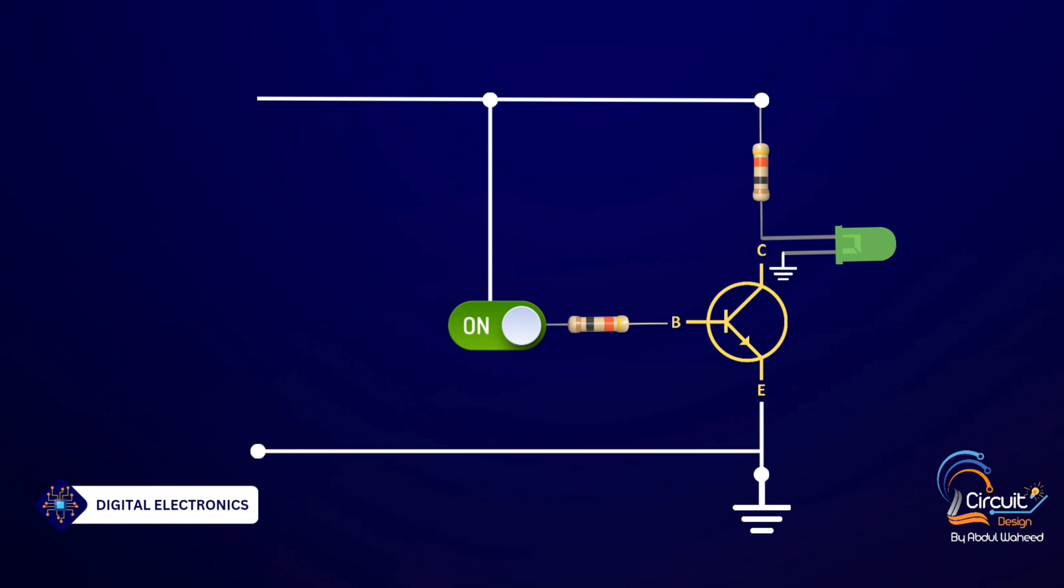Connect a negative lead to the emitter of the transistor, which is connected to the negative terminal of the battery. The anode of the battery is connected to the positive lead of the breadboard.